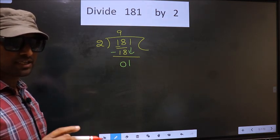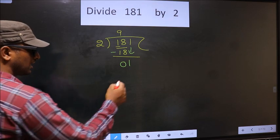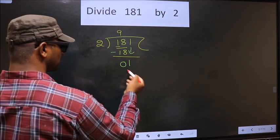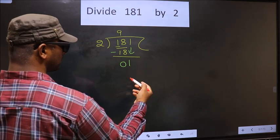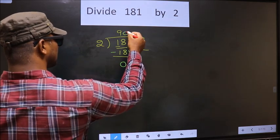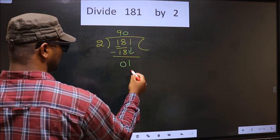Instead what you should think of is, what number should we write here? If we write 2, that will be larger than 1. So what we do is, we take 0 here. So 2 into 0, 0.